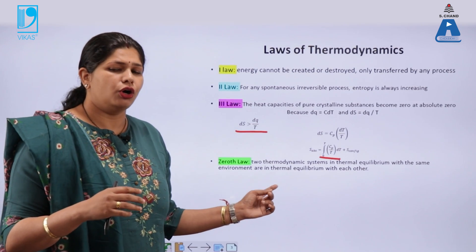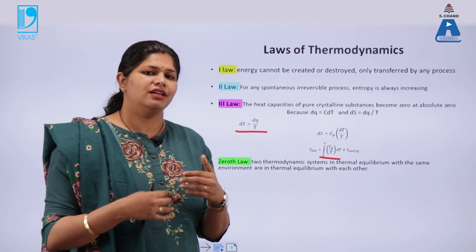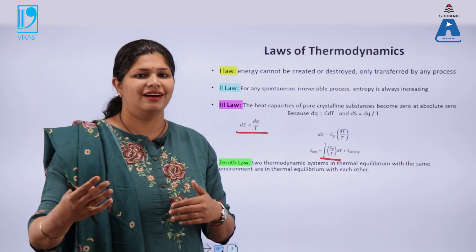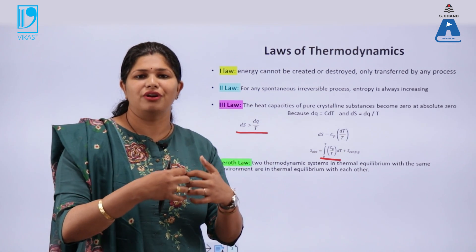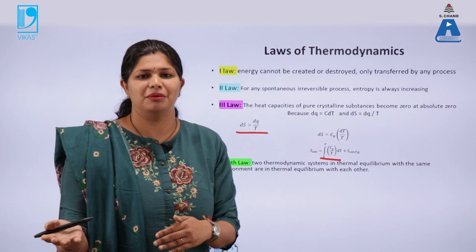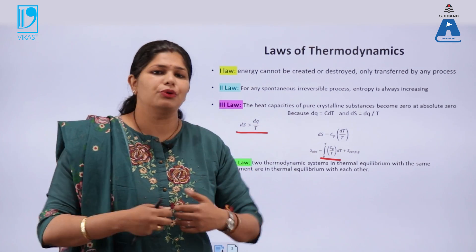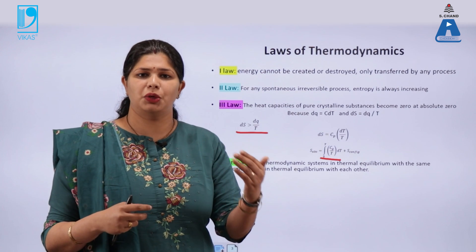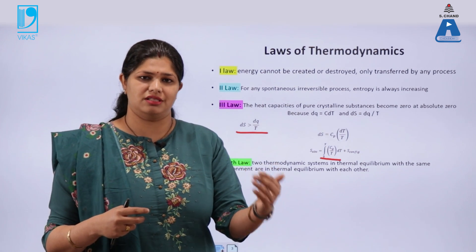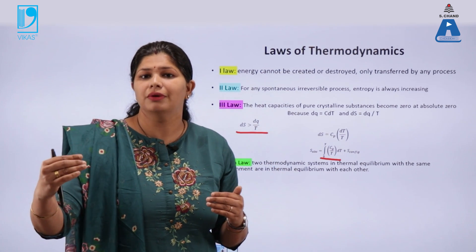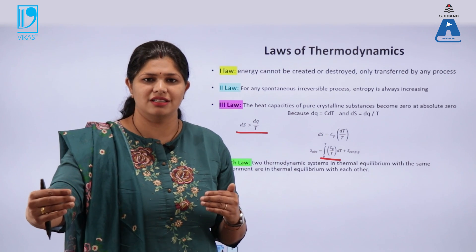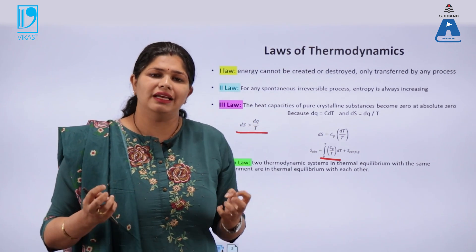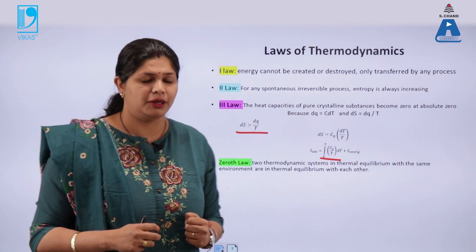The last one is the zeroth law. Although it is not the last one — it was realized after the first and second laws. Because the first and second laws were already established, they gave it the name zeroth law. It talks about thermal equilibrium between three bodies: if A is in thermal equilibrium with C, and B is in thermal equilibrium with C, then A and B will be mutually in thermal equilibrium with one another.